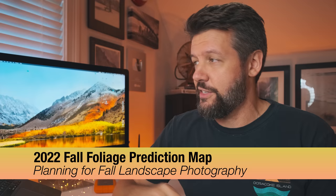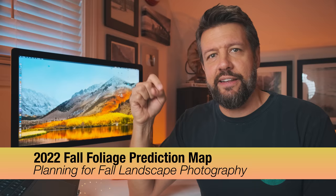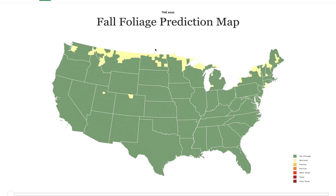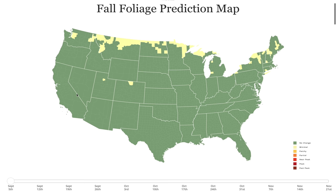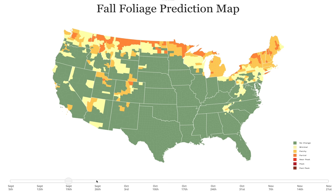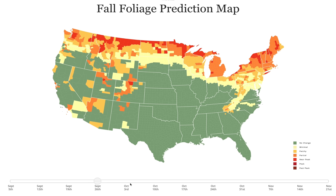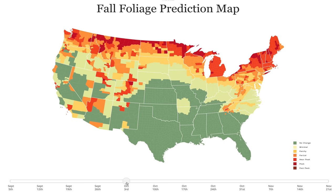One of my favorite resources when it comes to planning autumn landscape trips is the 2022 Fall Foliage Prediction Map — I'll put a link in the description. They put this out every year, usually right around the very beginning of September, and this was just released last night. You can slide the date control to help you plan or time out a specific trip. My upcoming Colorado workshop is September 26th through October 3rd, in southwest Colorado between Ridgeway and Telluride, and they're predicting patchy and partial color for that period.